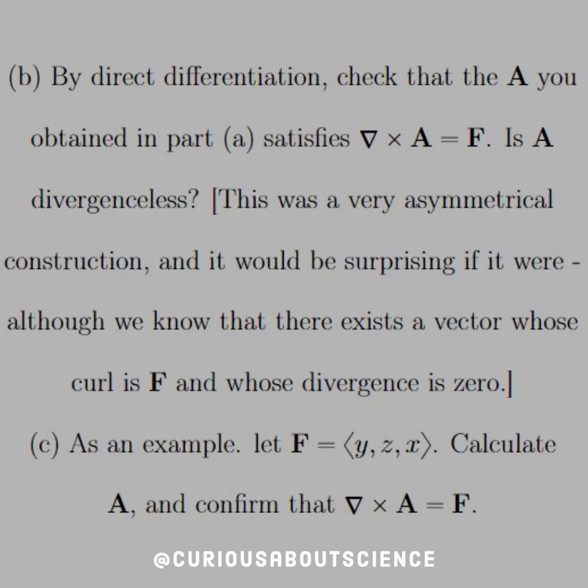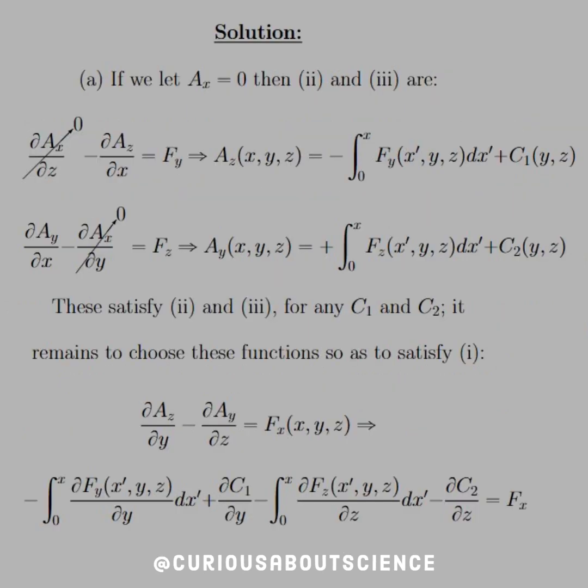For part B, by direct differentiation, check that the A you obtain in part A satisfies curl of A equals F. Is A divergenceless? This was a very asymmetrical construction, and it would be surprising if it were, although we know that there exists a vector field whose curl is F and whose divergence is zero. For part C, as an example, let F equal <y,z,x>, calculate A and confirm that the curl of A is equal to F. This is a really clunky problem, so hang in there with me.